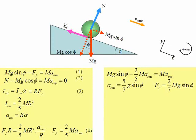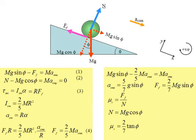To determine the minimum coefficient of static friction to prevent slipping, remember that the coefficient of static friction equals the friction force divided by the normal force N. From equation 2, we know that N equals Mg cos phi. Therefore, the minimum coefficient of static friction required is two-sevenths times tan phi. If the coefficient of static friction is less than this, slipping or sliding will occur.